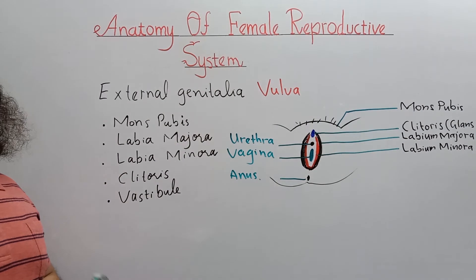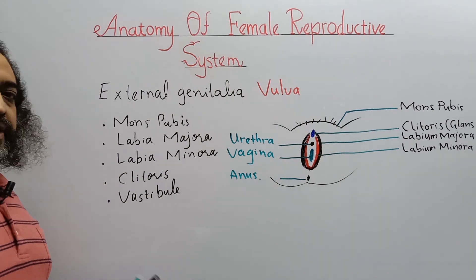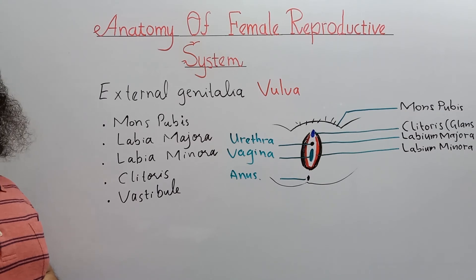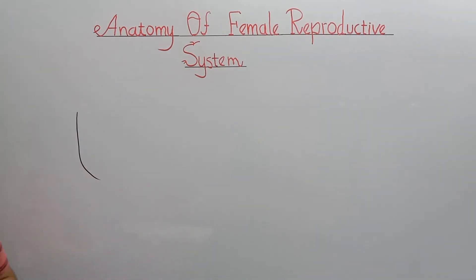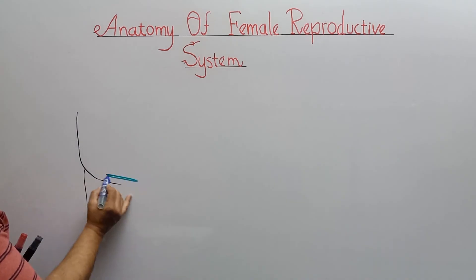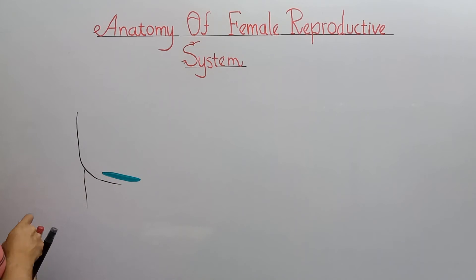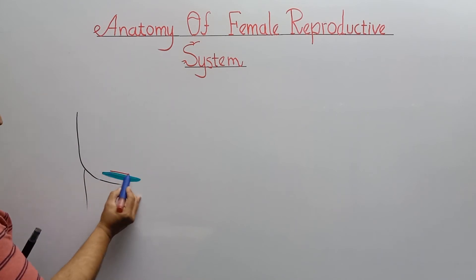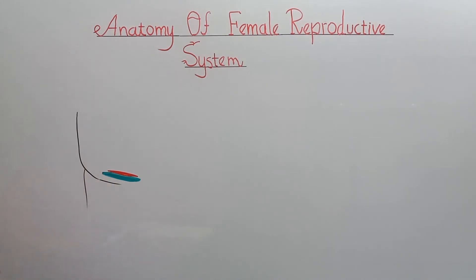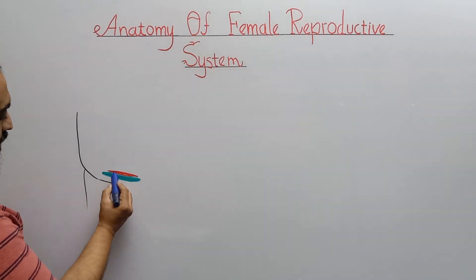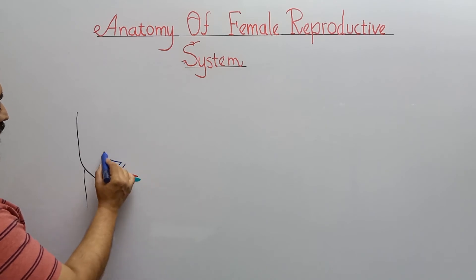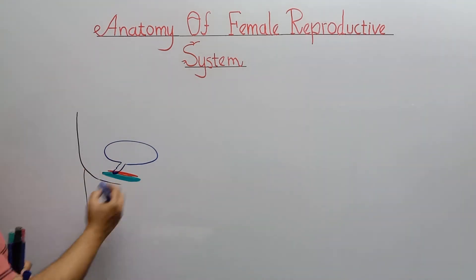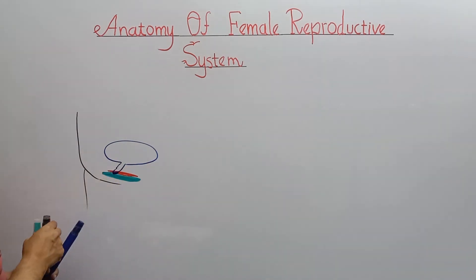This is the external reproductive structure of the human female. Now we have a proper view of the internal female reproductive structure. The human female reproductive system is made up of several major components. Here is labium majora — it is a skin fold — and below it is labium minora. Here are two openings: one is the urethral opening, which starts from here and opens into the urinary bladder.